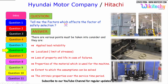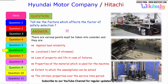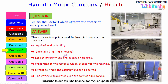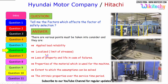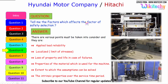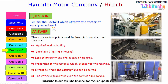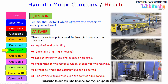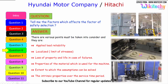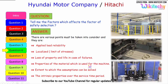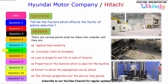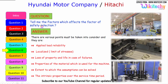Now let us see the factors which affect the factor of safety selection. Key factors include: loss of property and life in case of failure, the properties of the material used for the machine, the extent to which assumptions can be verified — such as how much it will extend or compress — and the intrinsic properties of the material over its service time period, all of which must be considered for safety factor selection.